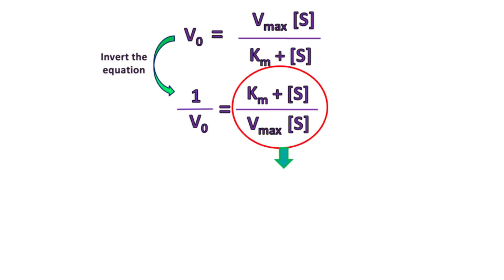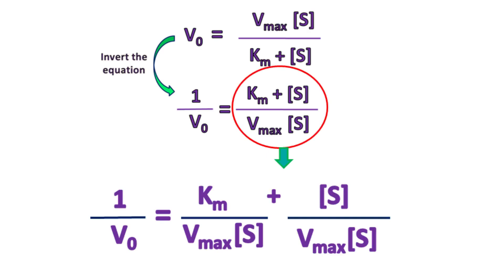Rearranging the term on the right-hand side gives 1 by V0 is equal to Km upon Vmax into S plus 1 by Vmax.